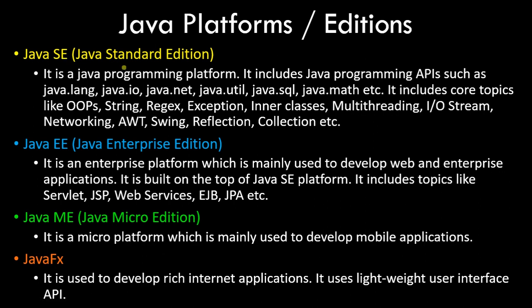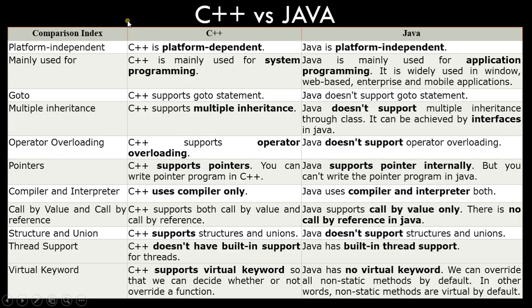We are going to focus on Java SE, developing console as well as standalone applications in this playlist. Now let's look at a basic comparison between C++ and Java. Talking about platform independence: C++ is platform dependent — the compiled object code differs per OS, so the same code compiled on Linux produces different object code than on Windows. Java, being both compiled and interpreted, first converts code into bytecode. This bytecode is platform independent — you can transfer it from Windows to Linux or Mac and it will execute successfully.